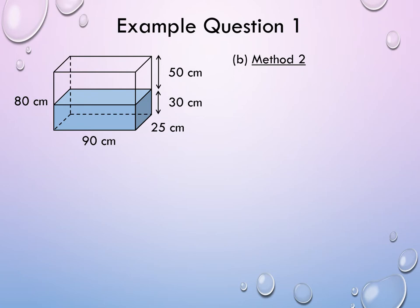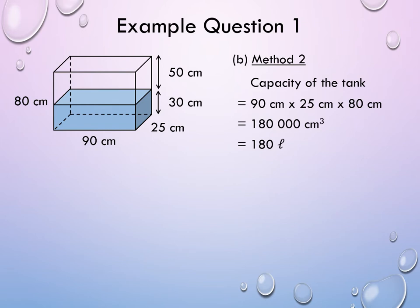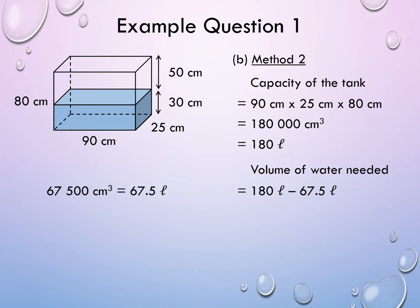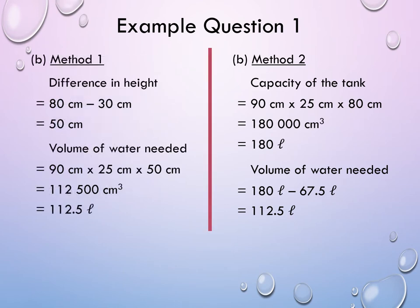Let's look at method 2. In method 2, we first find the capacity of the tank — that is the full amount of water the tank can hold. This is equal to 90 centimeters times 25 centimeters times 80 centimeters, which gives us 180,000 cubic centimeters, and this is equal to 180 liters. Then, the volume of water needed is equal to 180 liters minus 67.5 liters. 67.5 liters is from part A, which is the volume of water currently in the tank. So the answer is still 112.5 liters. Here you see the two different methods to find the volume of water needed.